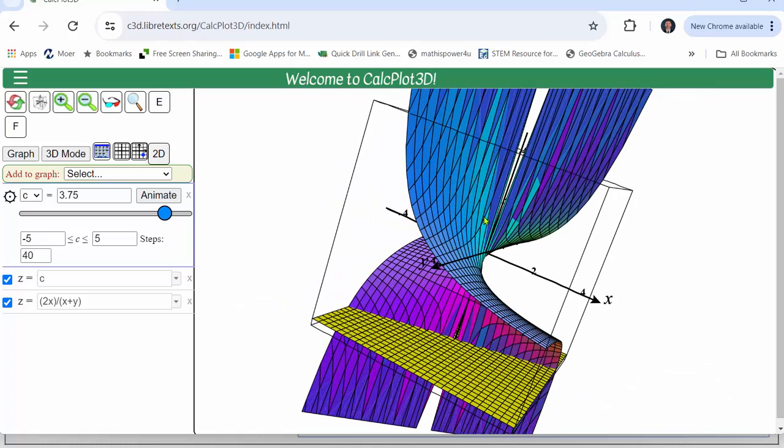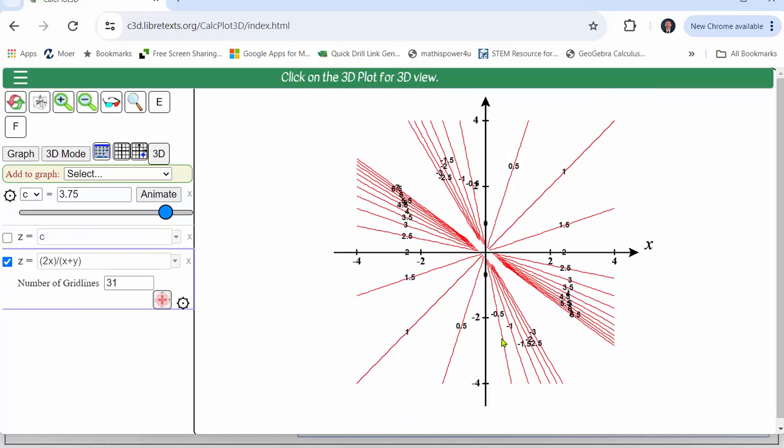Let's also take a look at the level curves or contour map for the surface before we determine one single level curve for the function. Here we see a contour map for the given function or we can say a set of level curves for the function. Again, notice there is some discontinuity, which we'll discuss in a moment.